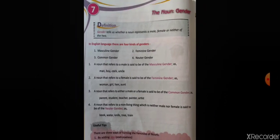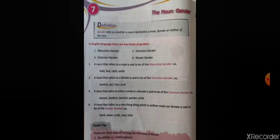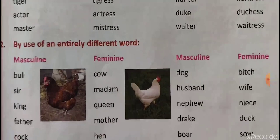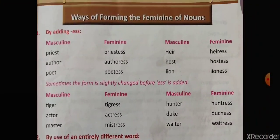Now the main explanation part of the chapter is over. We will study how we form the feminine form of the noun. There are some rules to follow. The first one is by adding '-ess'. Some words form the feminine by adding '-ess' to the masculine form.